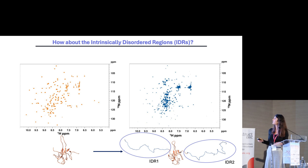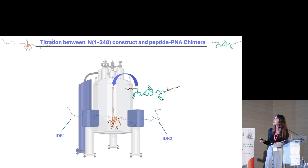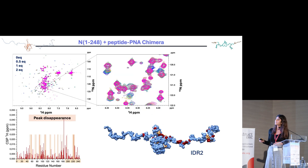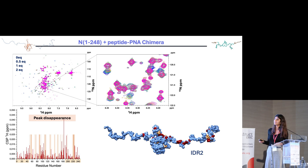This led to a more crowded NMR spectrum. I performed the same titration with this more extended construct and observed that the chemical shift perturbation values are higher, particularly for residues belonging to the intrinsically disordered regions. I also observed another effect not seen with the N-terminal domain alone: peak disappearance.